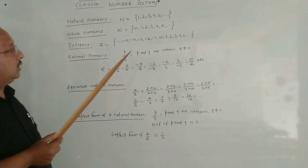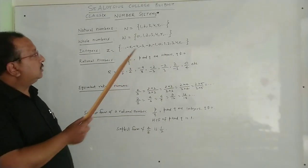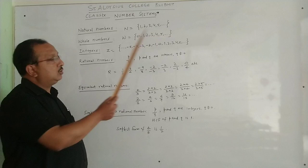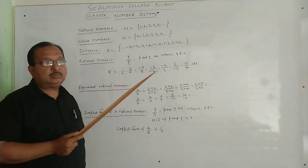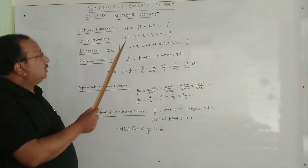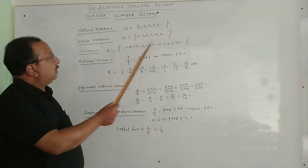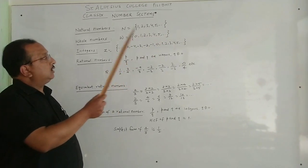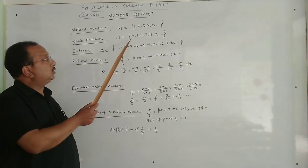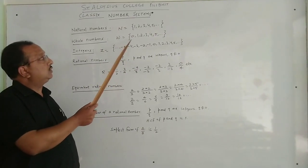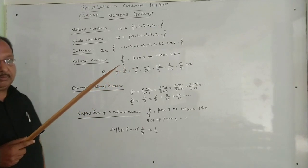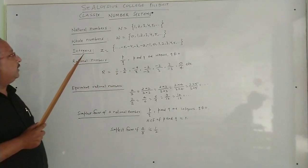And there are infinitely many whole numbers. From here you can see that each natural number is a whole number also. But all the whole numbers are not natural numbers, because 0 is in the whole numbers but it is not a natural number.